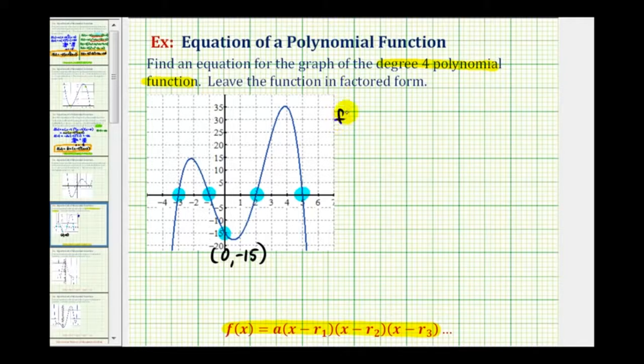So we'll have f of x equals a times, if one of the zeros is x equals negative three, then the factor must be x minus negative three, or x plus three. If one of the factors is x equals negative one, then a factor must be x minus negative one, or x plus one.